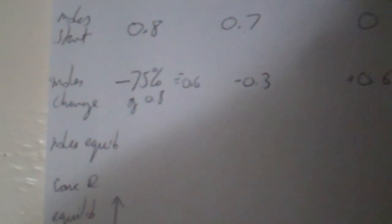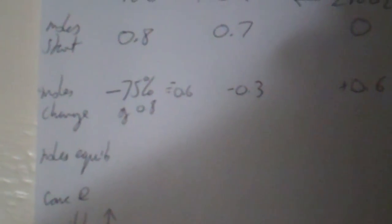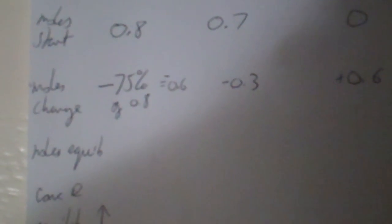And it says 75% of the original 0.8 was used, reacted. So that's going down by 75%. So 75% of 0.8 is 0.6.